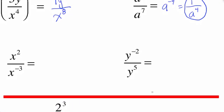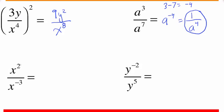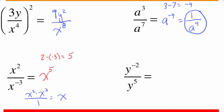Now let's take a look at a couple examples that confuse some students initially. How about x squared over x to the negative 3? One way of looking at this is to say 2 minus negative 3 — careful, it's not 2 minus 3, it's 2 minus negative 3 — and 2 minus negative 3 is actually positive 5. So this would be x to the fifth. Another way of doing this is to recognize that this x to the negative 3 in the denominator can turn into x cubed in the numerator, and again we get x to the fifth.